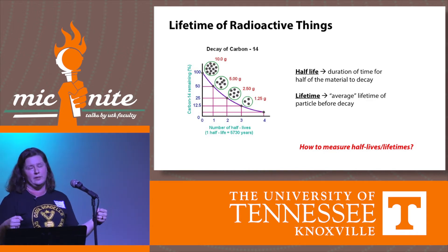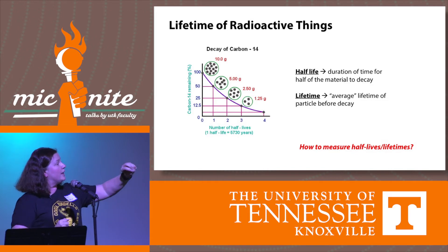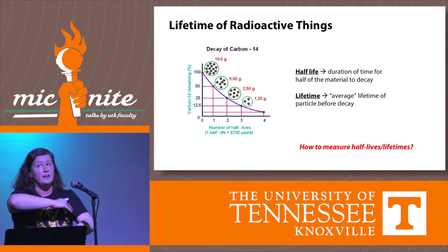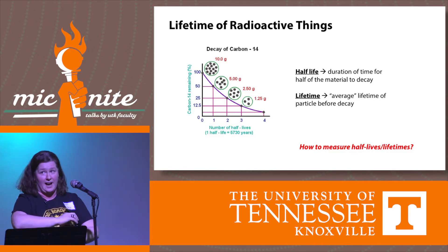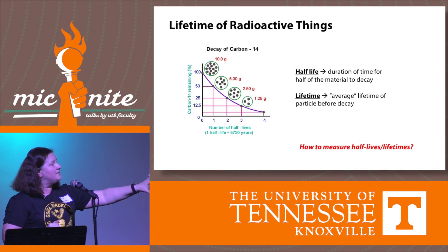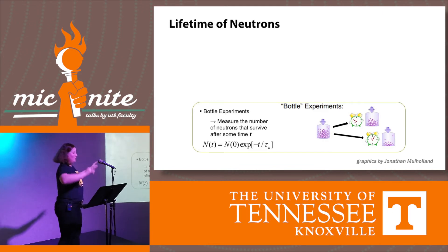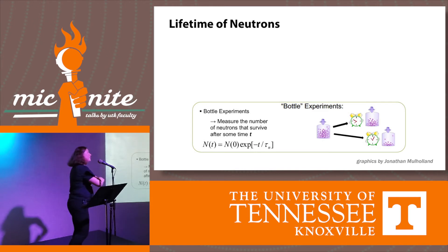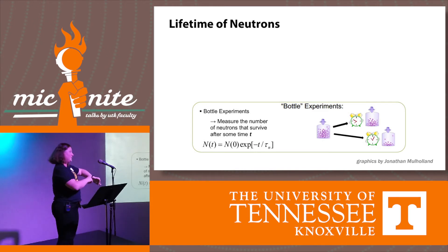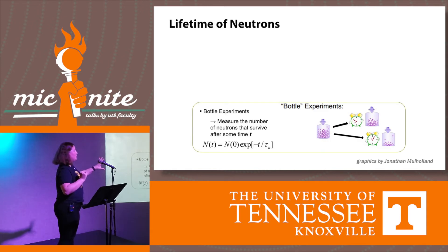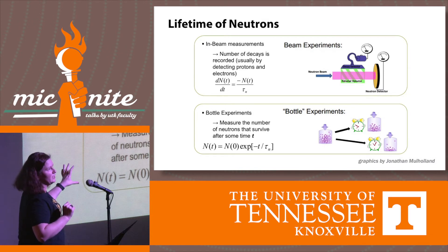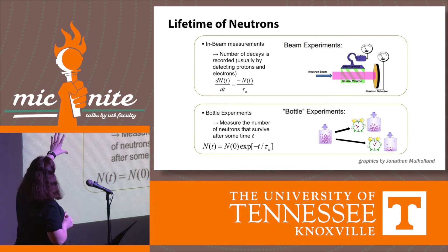How do we measure lifetimes of unstable — meaning radioactive — things? We characterize them via half-life: if you have a bunch of radioactive stuff, how long does it take before only half of it is left? The faster that happens, the more radioactive the thing is. The lifetime is the average time for decay — related to half-life but not the same. For neutrons, one method is a bottle experiment: you lock neutrons in a container and count how many are left after some time. This works well, but not for very long lifetimes like 10,000 years.